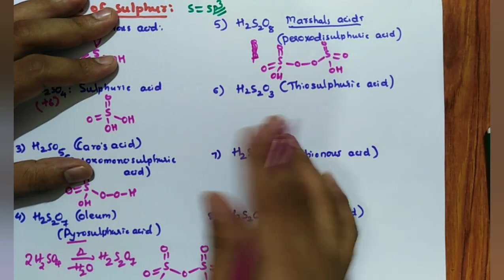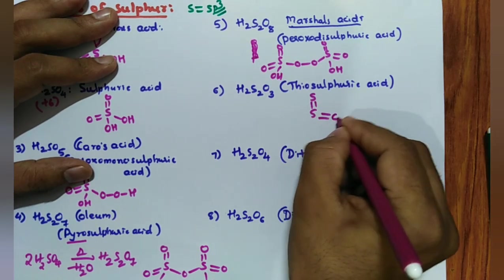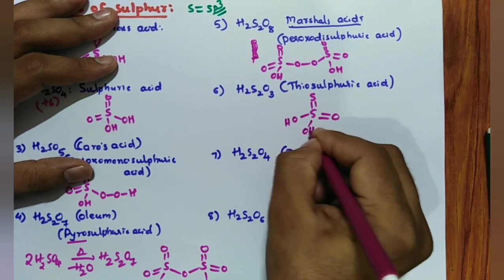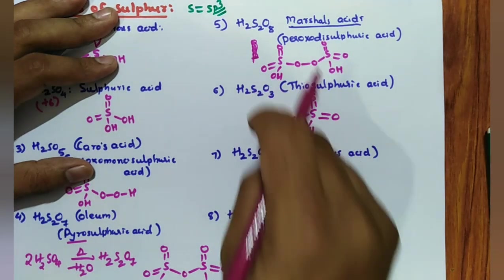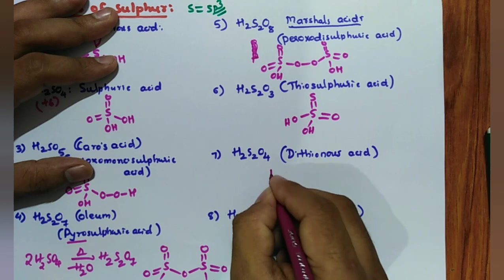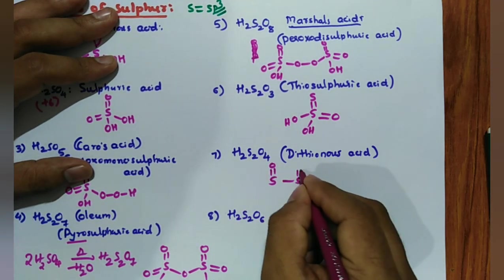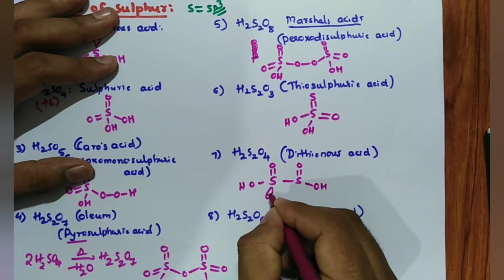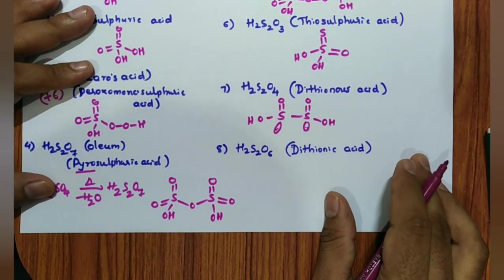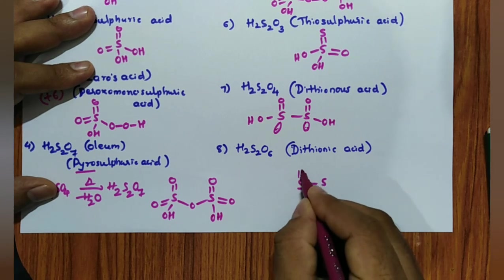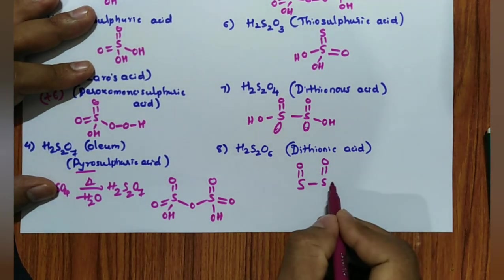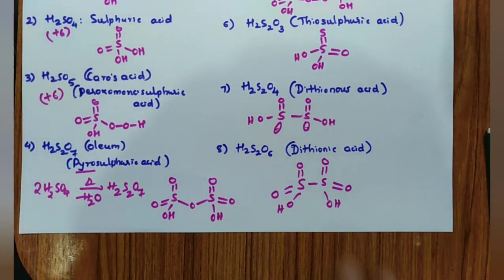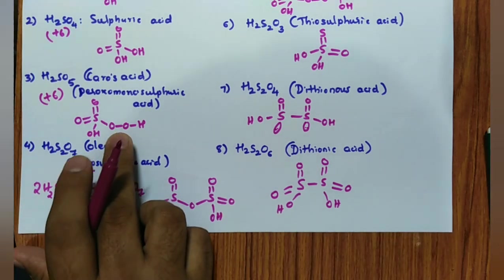H₂S₂O₃ (thiosulfuric acid): structure has S=S double bond with O, then two O–H groups remaining. H₂S₂O₄ (dithionous acid): has a direct sulfur–sulfur linkage — S=O, direct S–S bond, S=O, with O–H and O–H and one lone pair on each sulfur. H₂S₂O₆ (dithionic acid): also has a direct sulfur–sulfur linkage. All these are dibasic acids because they each have two O–H groups.